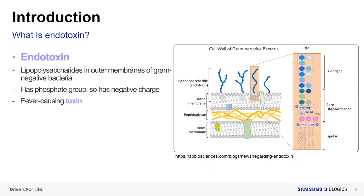What is endotoxin? Endotoxin is lipopolysaccharide found in the outer membranes of gram-negative bacteria. It has a phosphate group, giving it a strong negative charge. Endotoxin is a fever-causing toxin and can also trigger an immune response. Too much endotoxin can cause sepsis, so endotoxin levels in biologics must be monitored and controlled under regulatory guidelines. Any product with endotoxin levels beyond a specific limit cannot be released or used in patients.